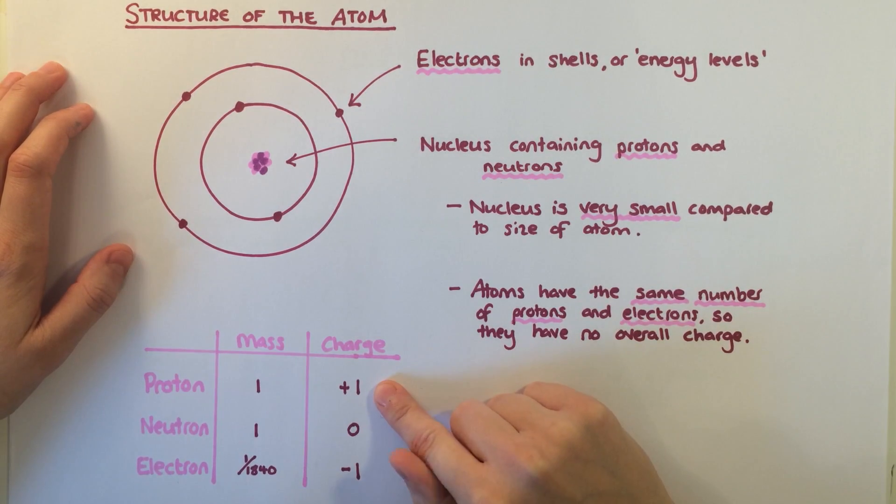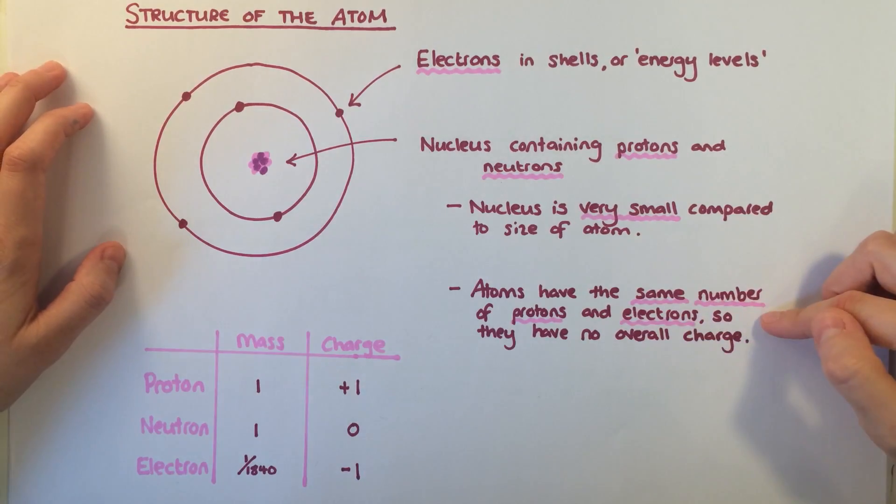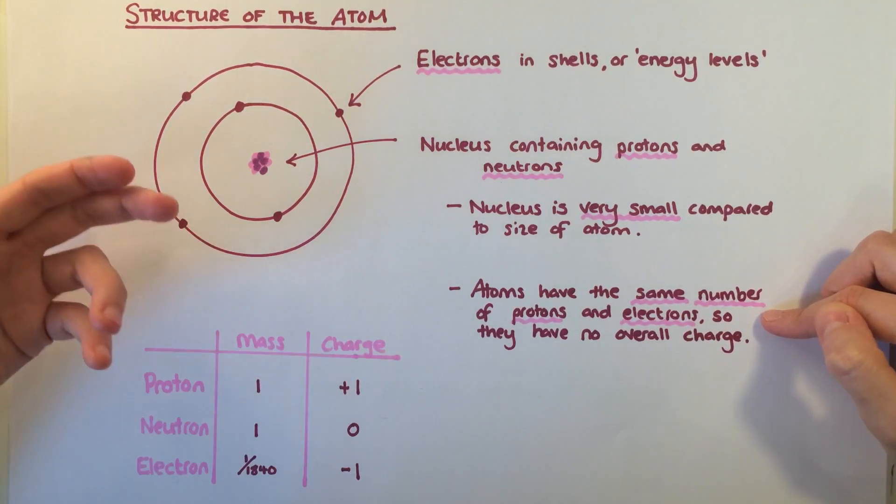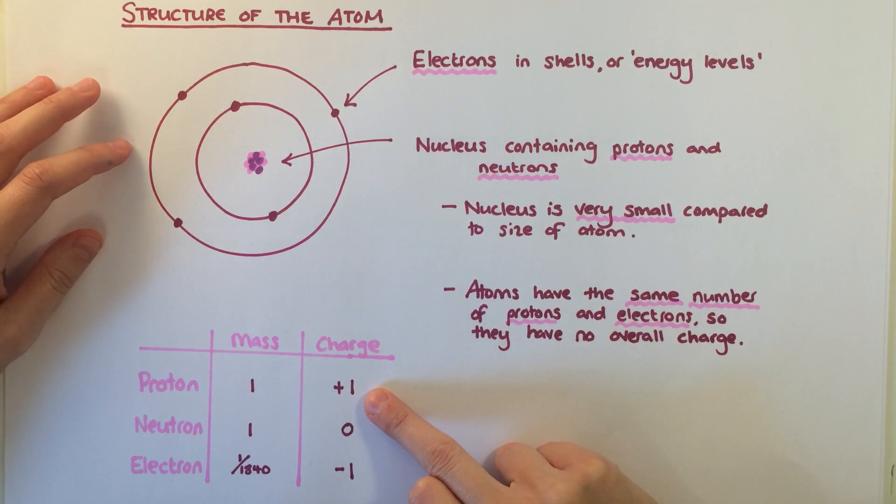Protons have a positive charge, electrons have a negative charge, and neutrons have no charge. Atoms are usually found with no overall charge, which means they must have the same number of positive protons and negative electrons.